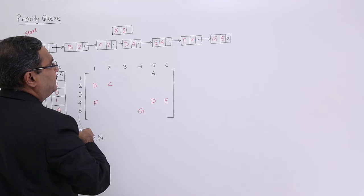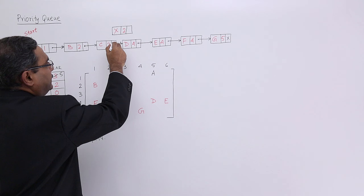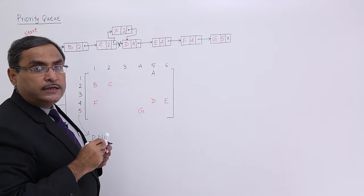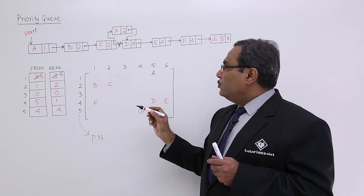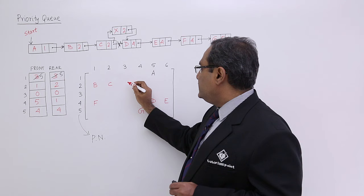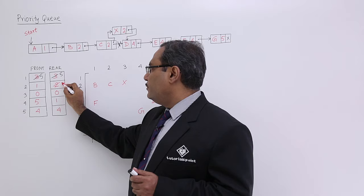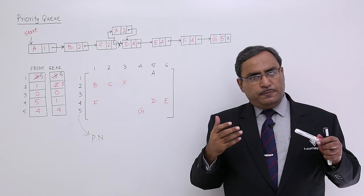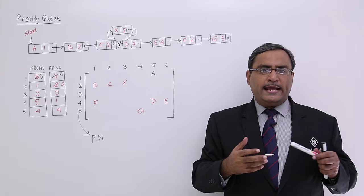What will happen is this link will be cancelled, and new links will be formed. So the node x will get inserted in between C and D. We know that B, C, x — so x gets inserted here. My rear will become not 2, but rear will become 3, because insertion according to the queue logic will be done only at the rear end. In this way, I have discussed what is the priority queue, how it can be represented using a linked list or using one-dimensional and two-dimensional arrays, and how to perform the insert operation.